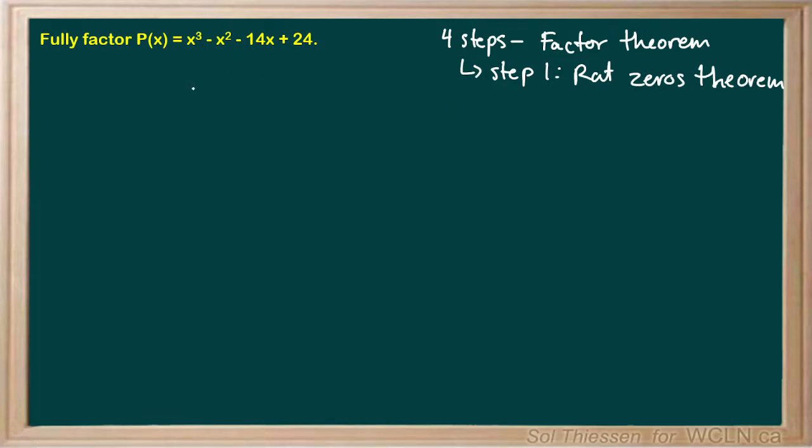Fully factor p(x) which is x cubed minus x squared minus 14x plus 24. This is going to be a longer solution, so I've written out our approach here. We're going to be using the four-step process to apply the factor theorem, and in step one of that process, where we find a root, we're going to employ the rational zeros theorem to help us decide what values to test.